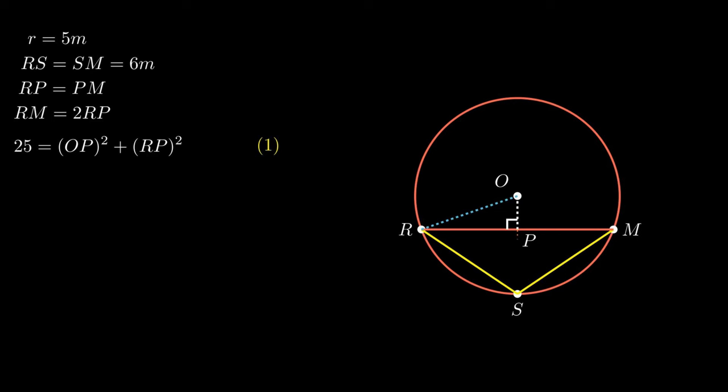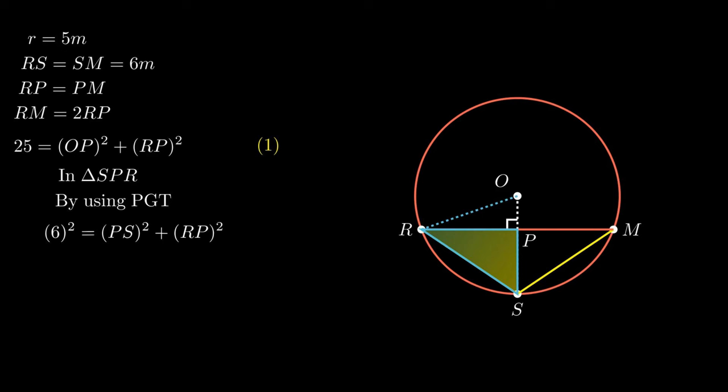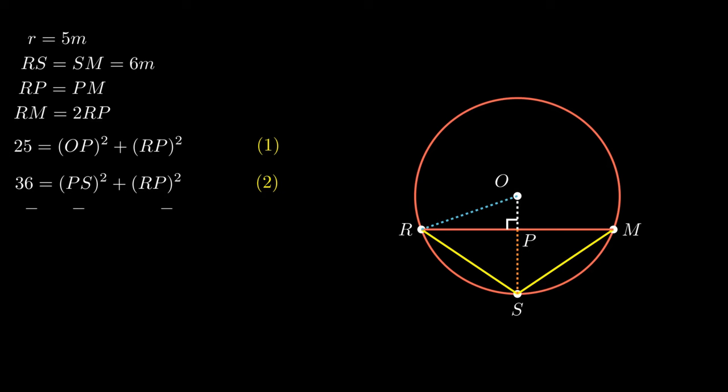To solve equations with two variables, we need a second equation with the same variables. We extend segment OP to point S, forming another right angle triangle SPR. In triangle SPR, applying the Pythagorean theorem gives: 6² = PS² + RP², which simplifies to 36 = PS² + RP² (Equation 2). Subtracting Equation 1 from Equation 2, we get: 11 = PS² − OP².